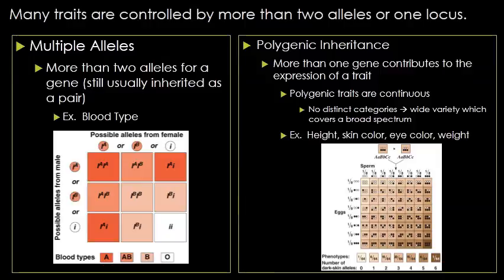Another exception is that many traits are controlled by more than two alleles at one location. If there are more than two alleles for a gene, it is still typically inherited as a pair because we are diploid organisms, but there could be more than two options — as we just saw with blood type, which has three alleles, but you still only inherit two.